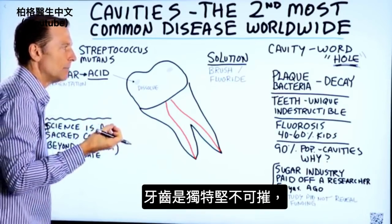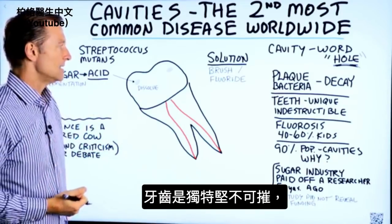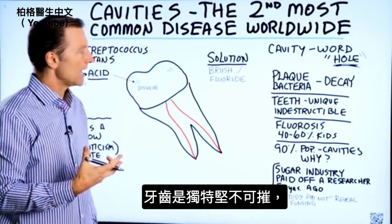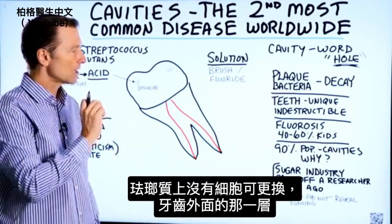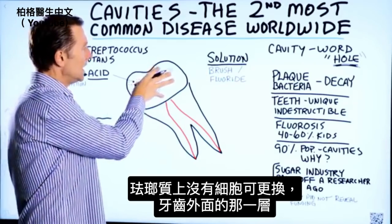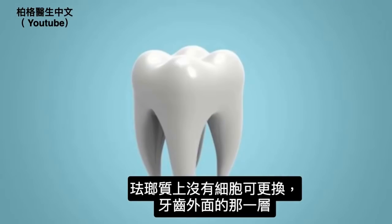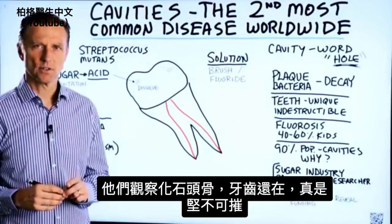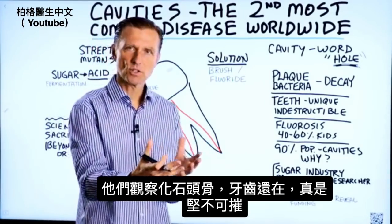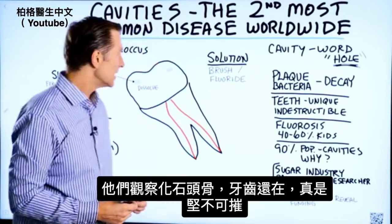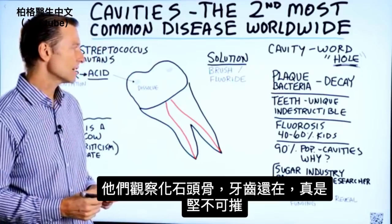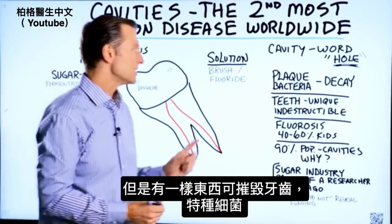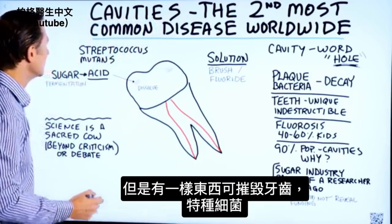What's unique about the teeth is that they're supposed to be indestructible, and you don't have cells that are constantly being replaced on the enamel, the outside of the tooth. They know this from looking at fossils — certain skulls, the teeth are usually still there and they're very indestructible. But there's one thing that will destroy them, and that is a certain type of bacteria.